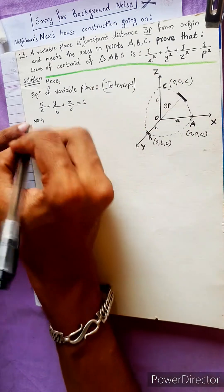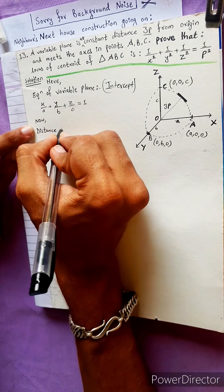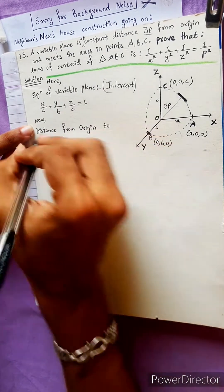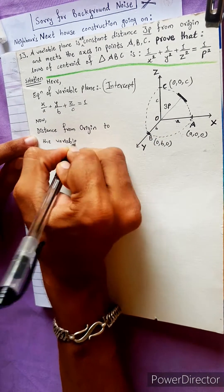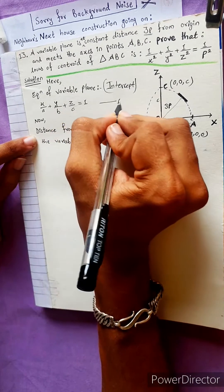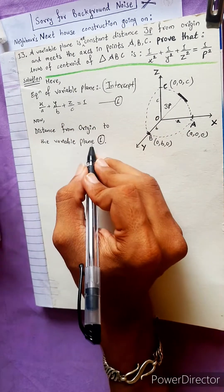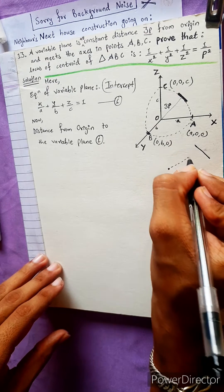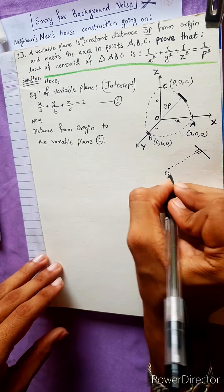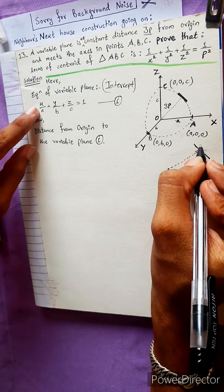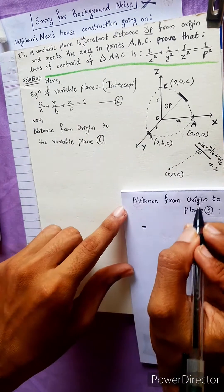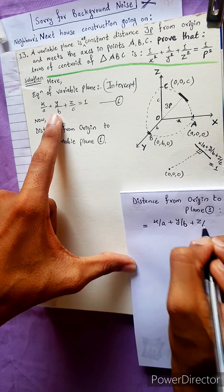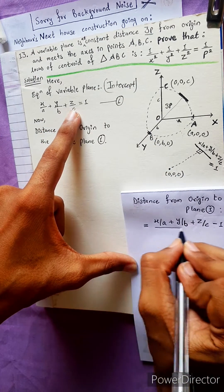The distance from the origin to the variable plane is 3P. Using equation one, we apply the perpendicular distance formula from the origin (0, 0, 0) to the plane.